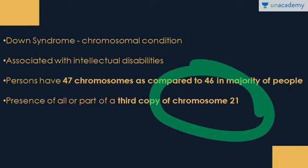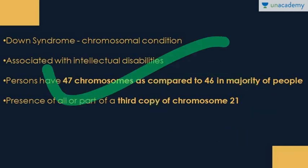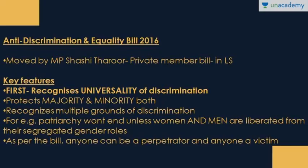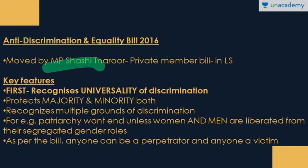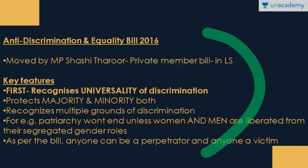Next we have the Anti-Discrimination and Equality Bill 2016, moved by MP Shashi Tharoor as a private member bill. If the government pushes it through, it would be a very good step, but it needs government support. There are four key features that make this bill relevant.